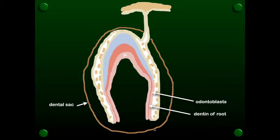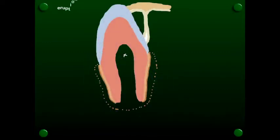So then with the eruption of the tooth, we're going to see that the dental sac collapses down. And it's going to collapse and just surround the roots of the tooth.